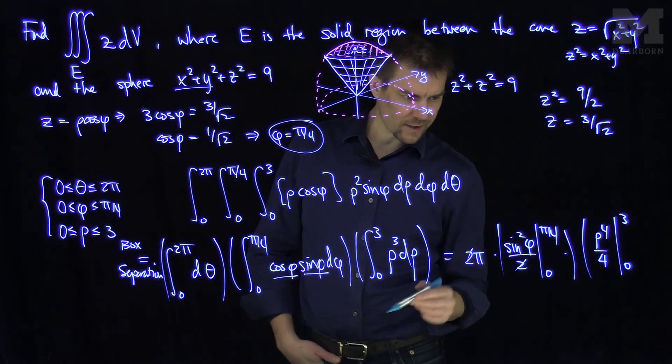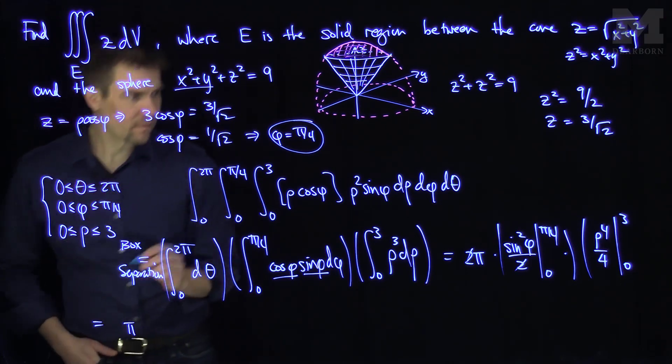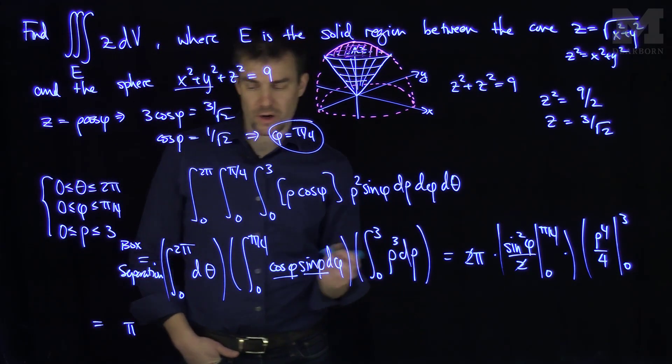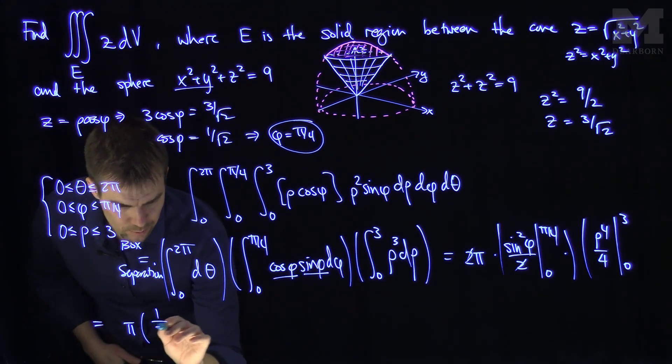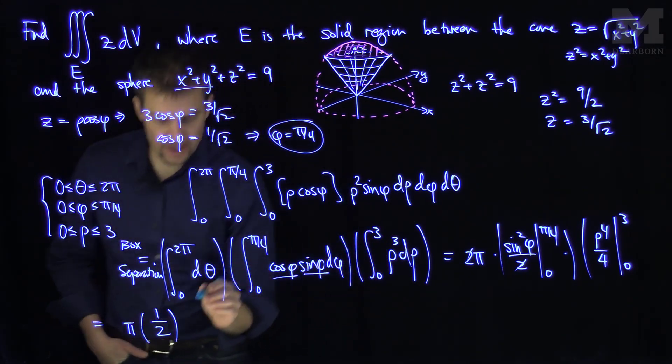So of course this 2 over here and this 2 will cancel. And so we'll have a total of pi from that first term. The sine of pi over 4 is 1 over root 2, so when I square it I get a 1 half. So that sine term will turn into a 1 half. Then I'm going to plug in 3, 3 to the fourth power is 81,